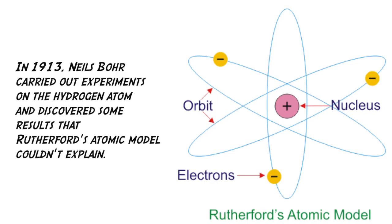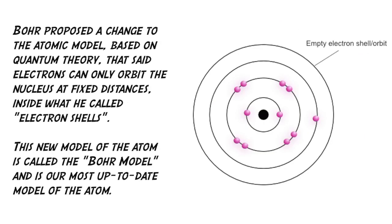In 1913, Niels Bohr carried out experiments on the hydrogen atom, and discovered some results that Rutherford's atomic model could not explain. Bohr proposed a change to the atomic model, based on quantum theory. That said, electrons can only orbit the nucleus at fixed distances, inside what he called electron shells. This new model of the atom is called the Bohr model, and is our most up-to-date model of the atom.